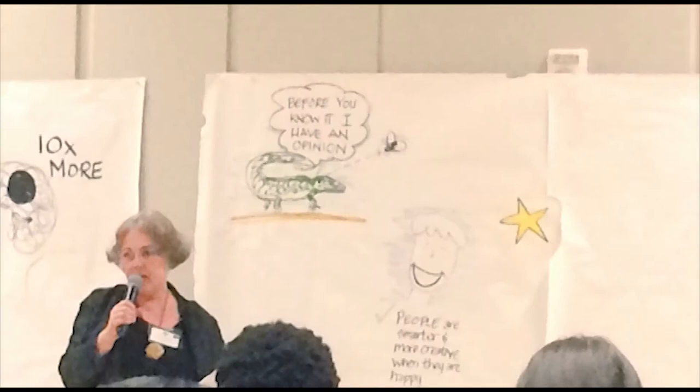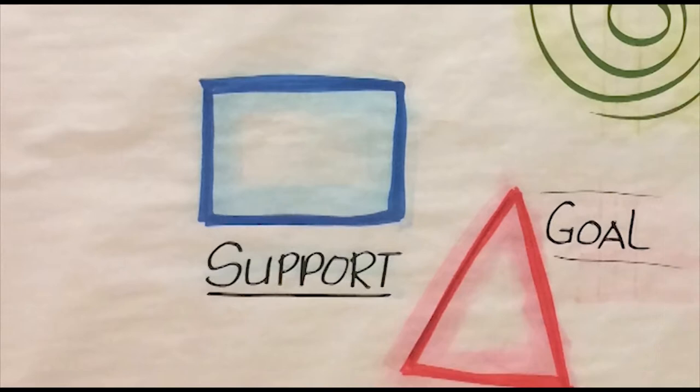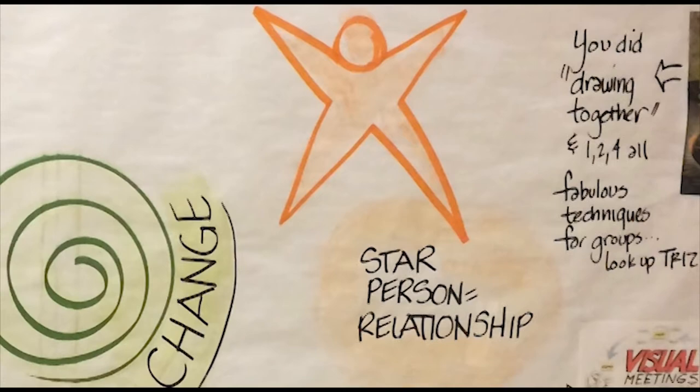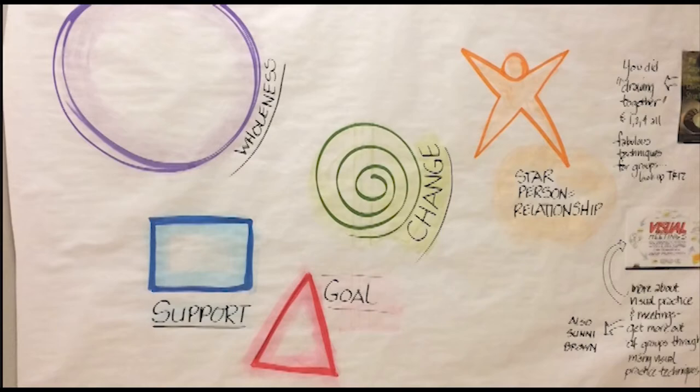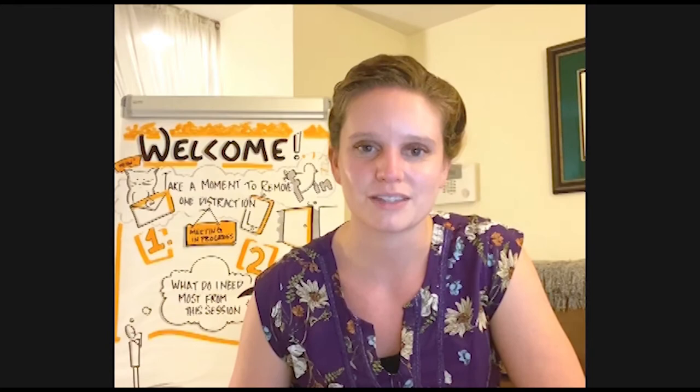Her name was Barb Siegel. Barb led this activity where there are five symbols: a circle that represents wholeness, a square that represents stability, a triangle that represents goals, a star person that represents relationships, and a spiral that represents change. Barb taught us all five symbols and then had us tell visual stories to each other using only those symbols. Something hit me — a light bulb went off. I said, this is my communications background coming through in visuals, my dance background coming through in art, and my facilitation and organization development background showing how we use visuals to improve organizations and create change. It was everything I wanted in one thing.